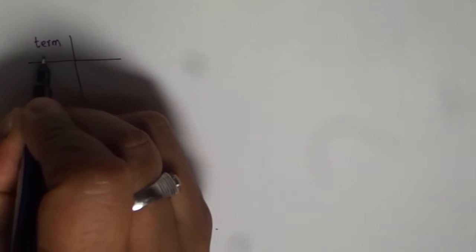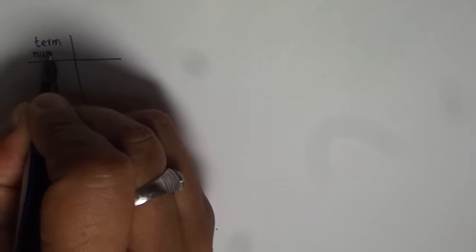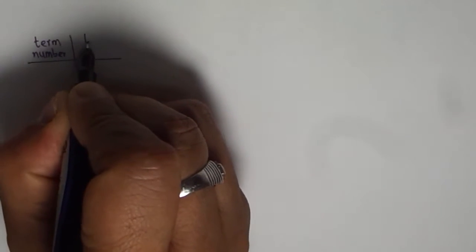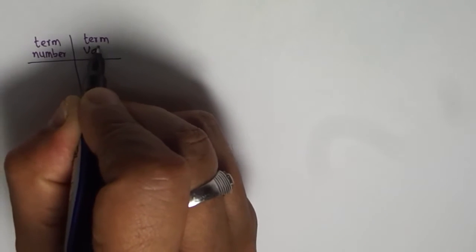Let me give you some examples. So let me start with a t-table. So we will write terms here, term number and term value or output.